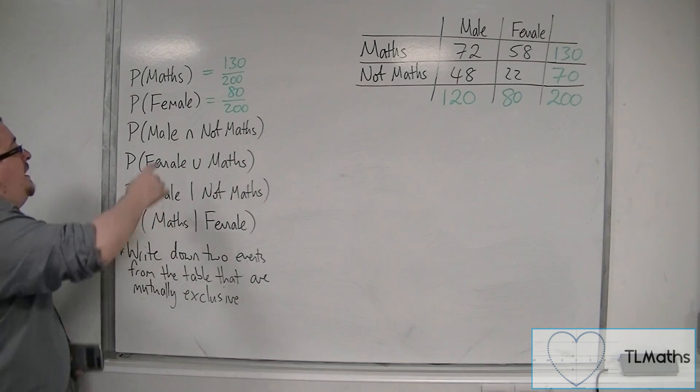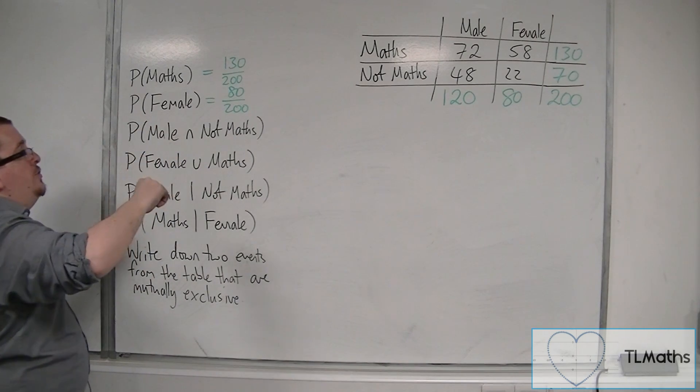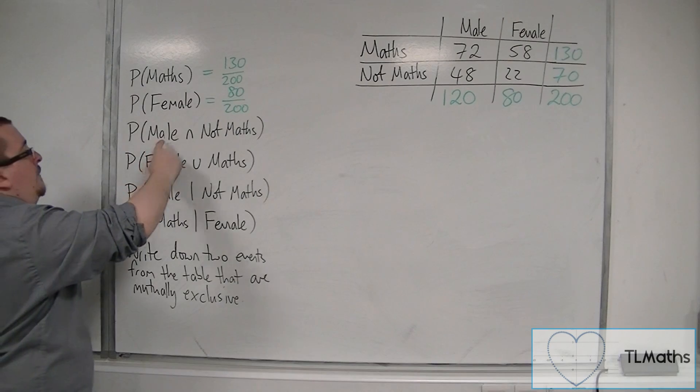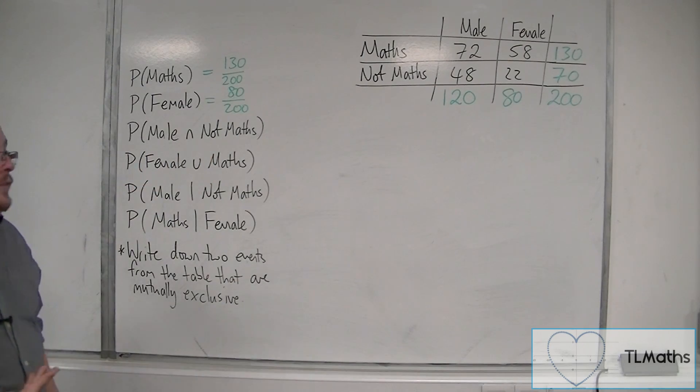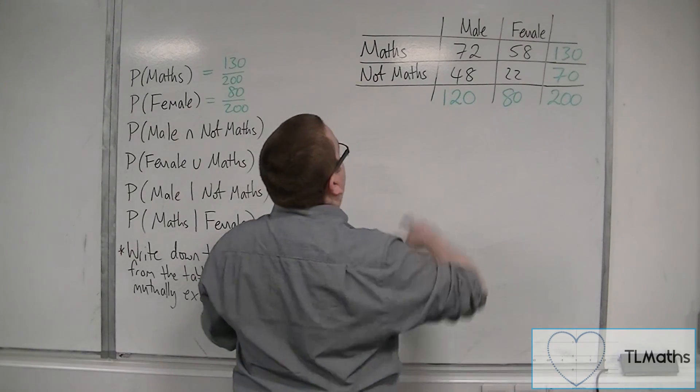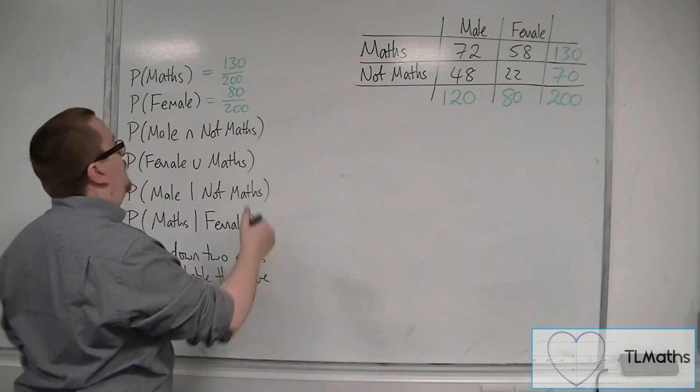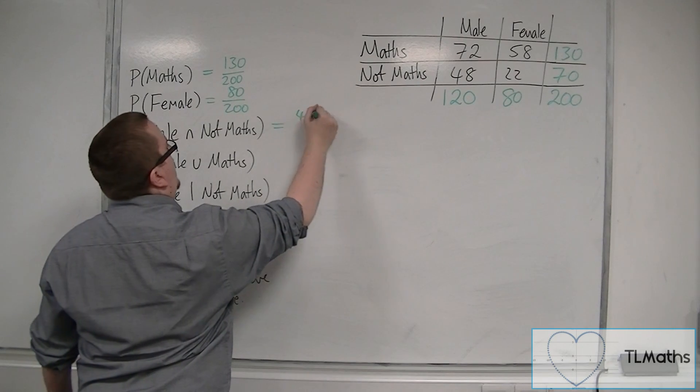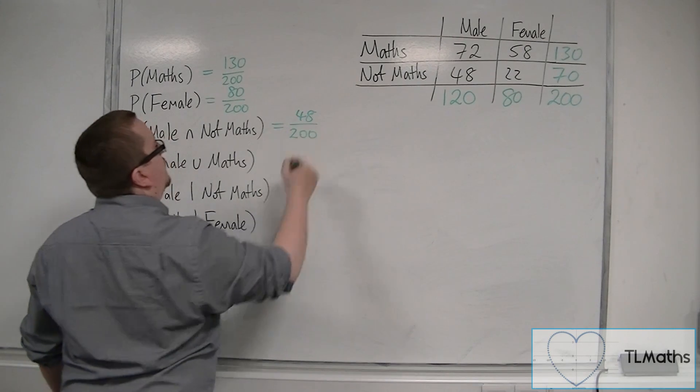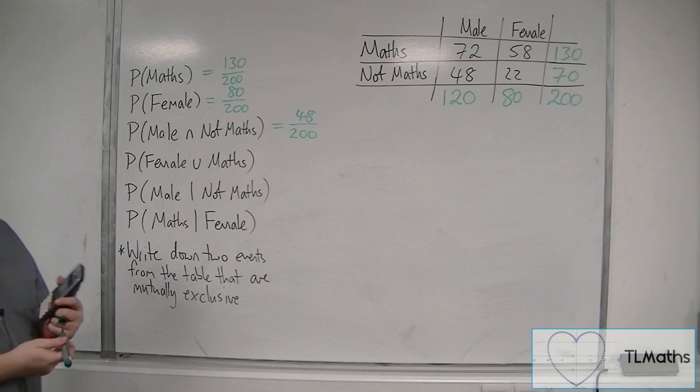The probability of selecting a student that is both male and doesn't do maths. So male and doesn't do maths. There are 48 students there out of the 200, and so that is the probability I'm looking for. So 48 out of the 200 students.